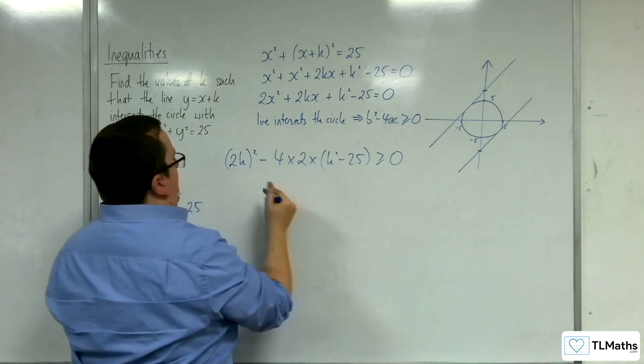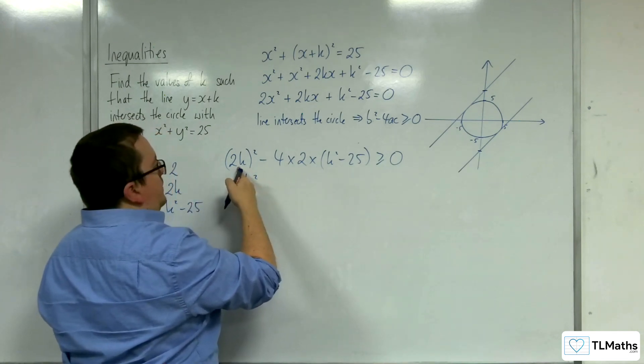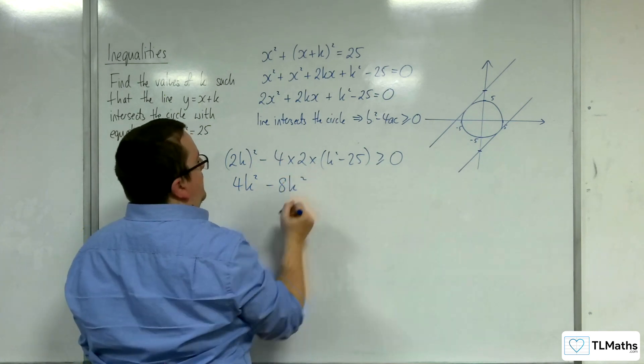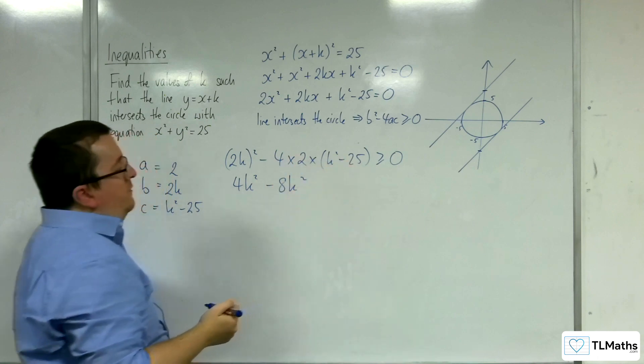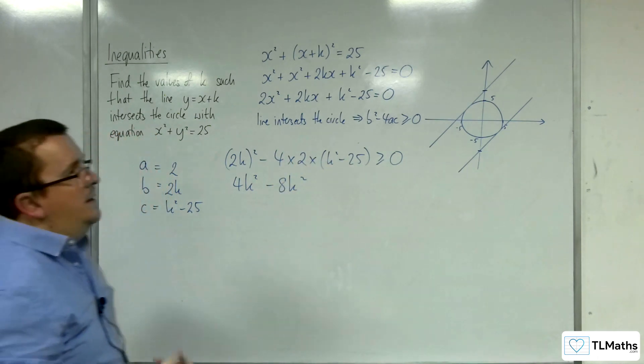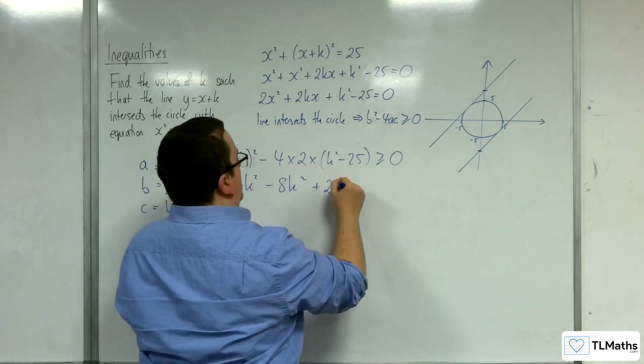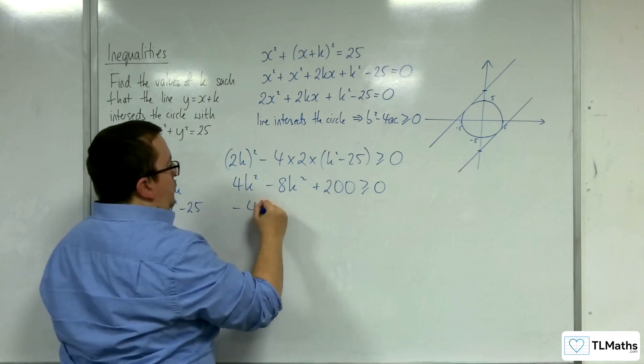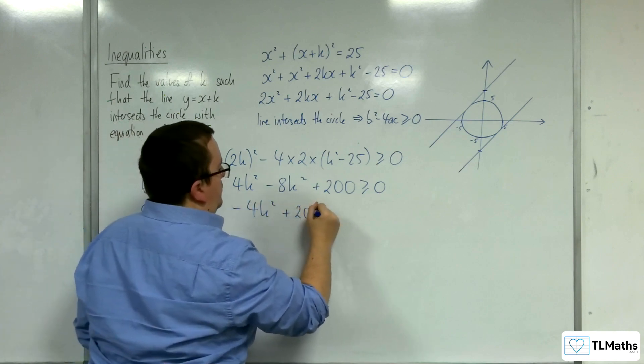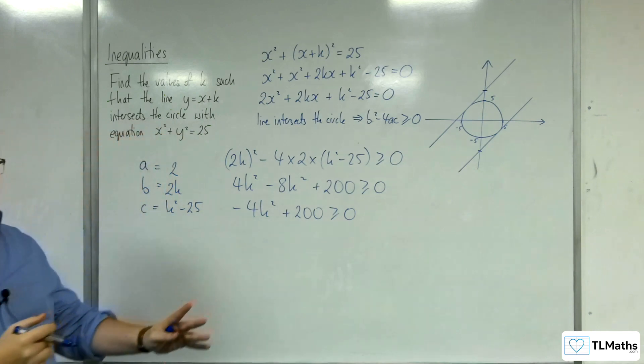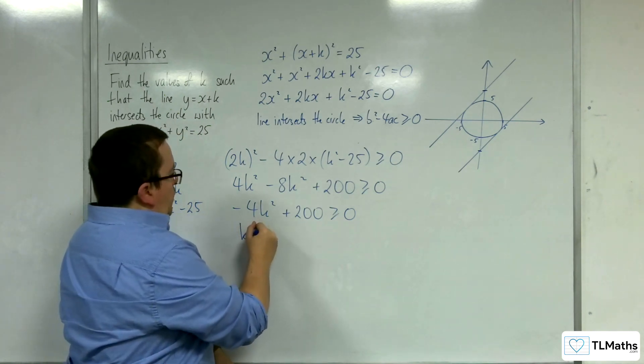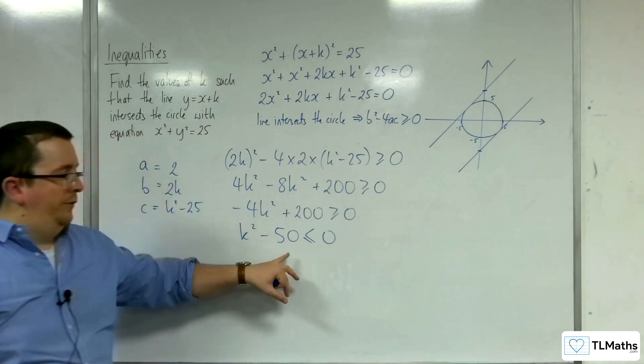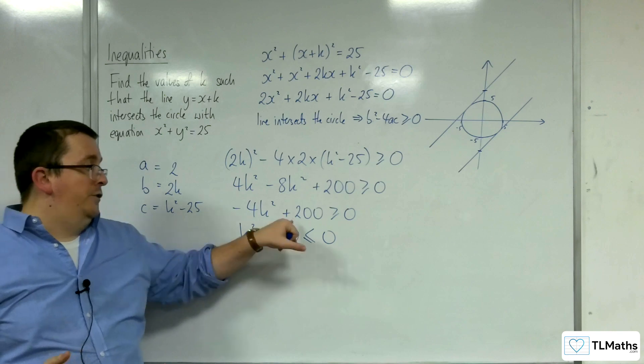So expand this out, I get 4k squared, then I've got 4 times 2 times k squared, so take away 8k squared, and then 4 times 2 times 25, so 50, so that's 200, so plus 200 is greater than or equal to 0. So minus 4k squared plus 200 is greater than or equal to 0. Let's divide through by minus 4. So k squared minus 50 is less than or equal to 0 now, because I've divided through by negative.